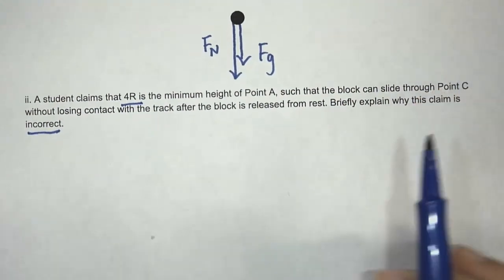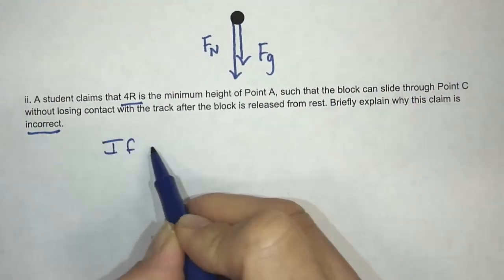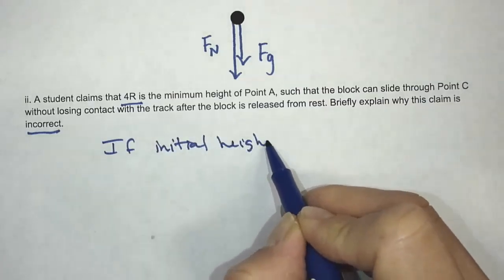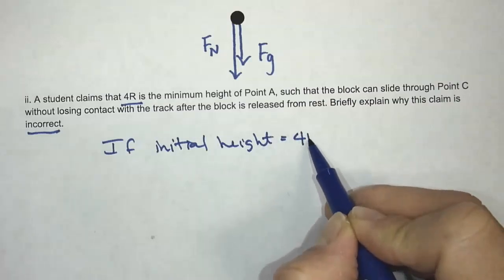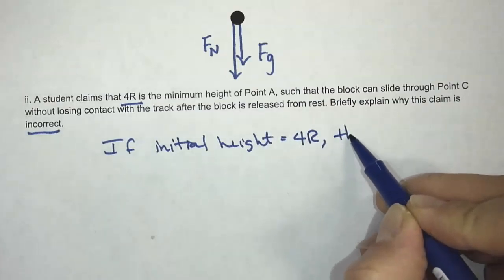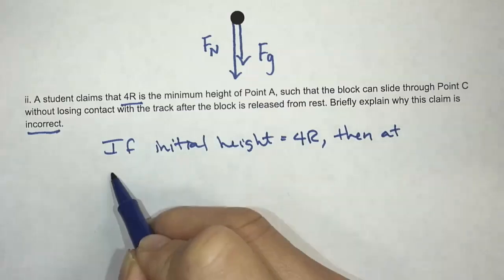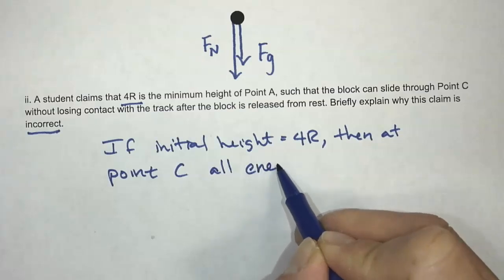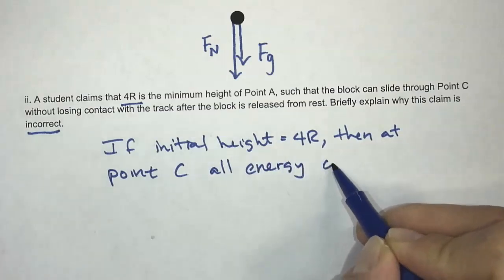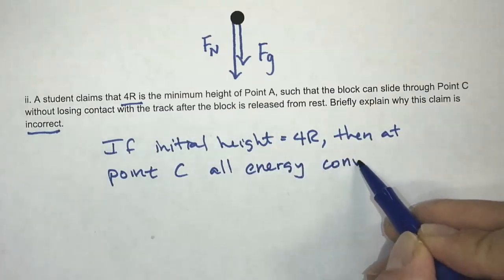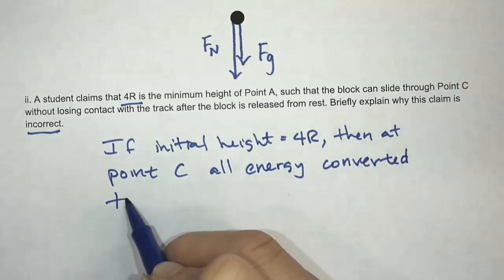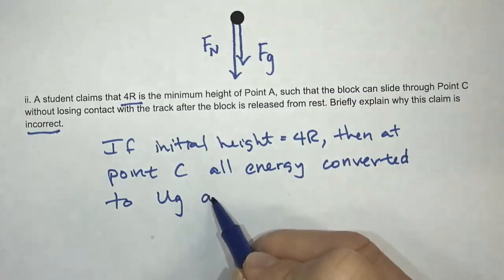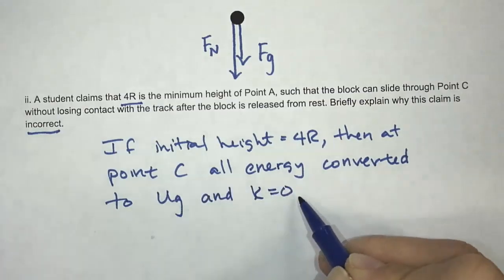So what we're going to say is that if the initial height is equal to 4R, then at point C, all energy is converted to gravitational potential energy. And that means the kinetic energy is zero.